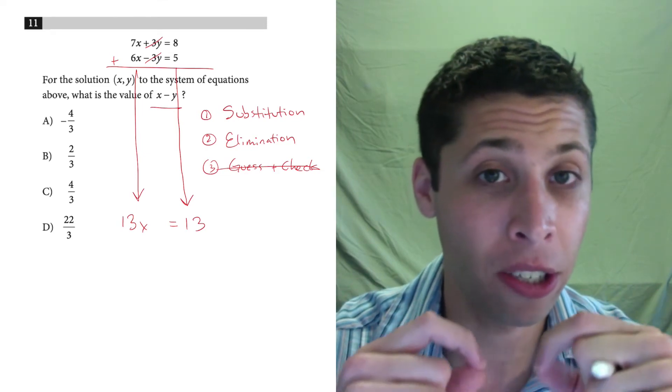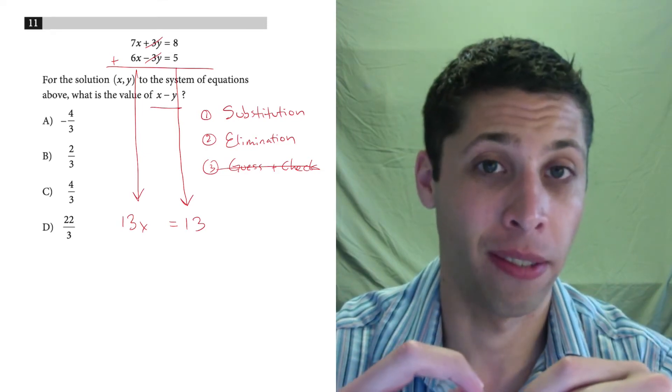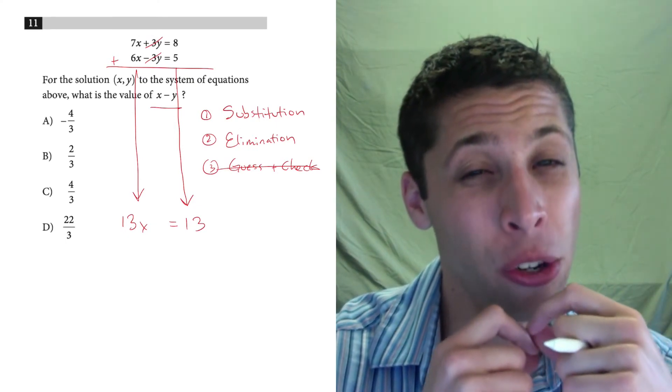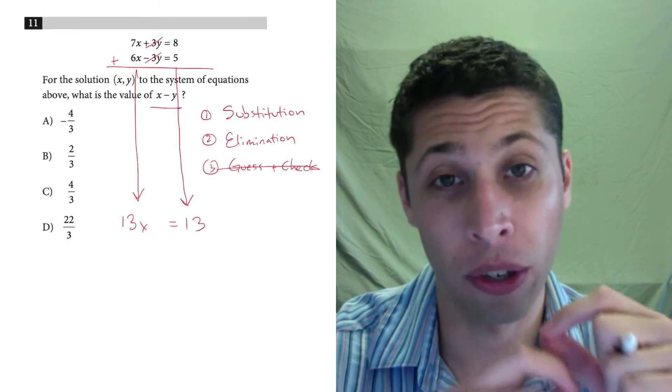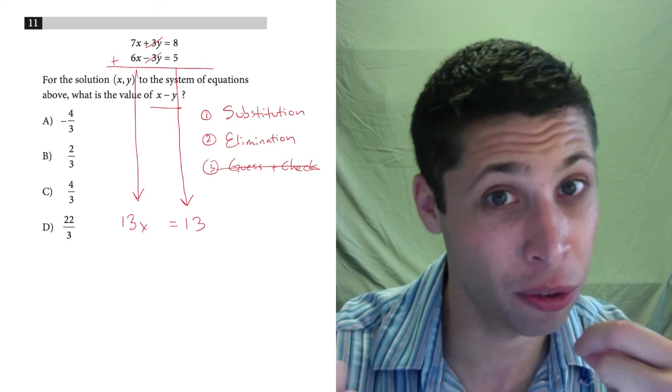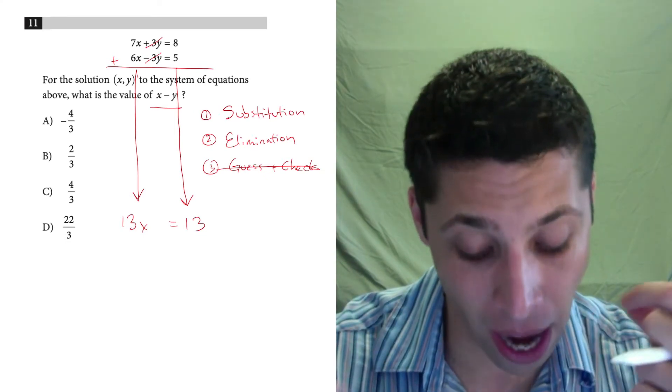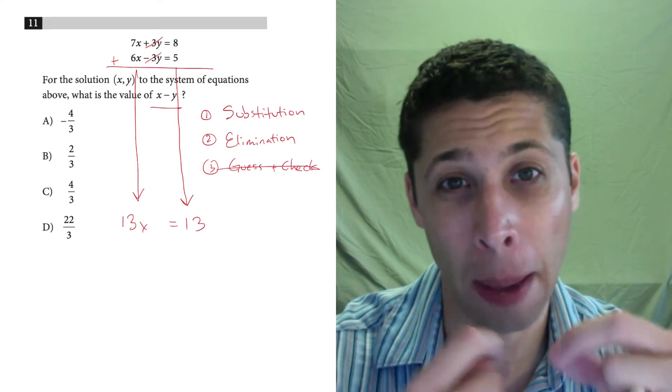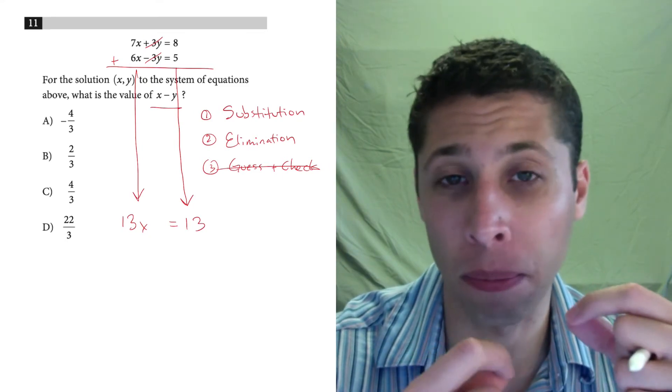But one advantage of elimination over substitution is that we usually don't need to deal with fractions when we use elimination. With substitution, we're going to need to kind of get that x or the y by itself. So that means dividing by 3, dividing by 7, weird things are going to happen. And it can kind of make the algebra more difficult.